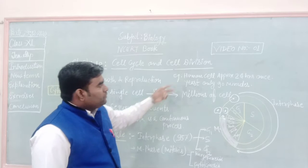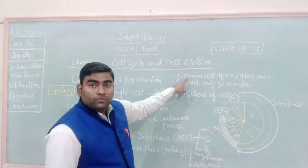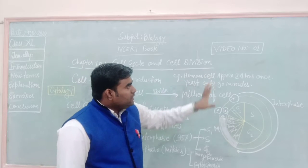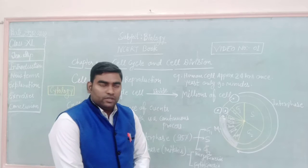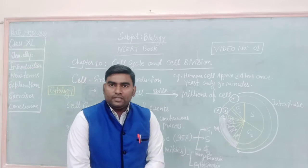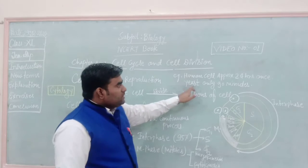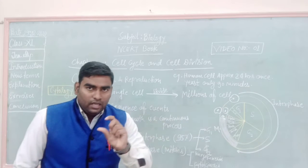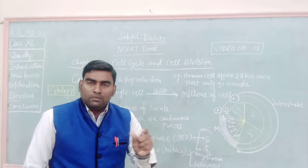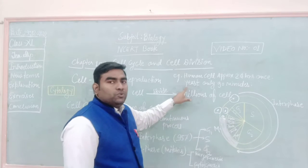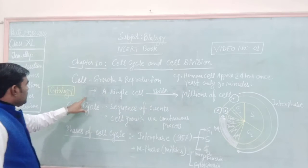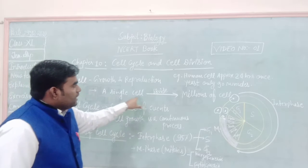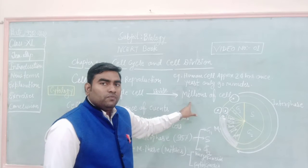First is a human cell taking around 24 hours once to divide, and yeast cell only 90 minutes. This is varying among organism to organism or cell to cell, this duration. But here a single cell can be divided into millions of cells.